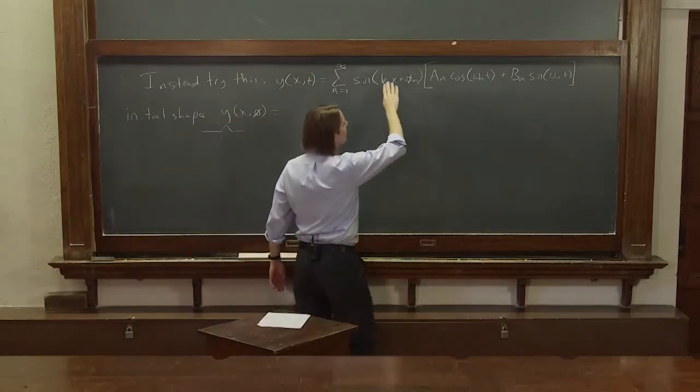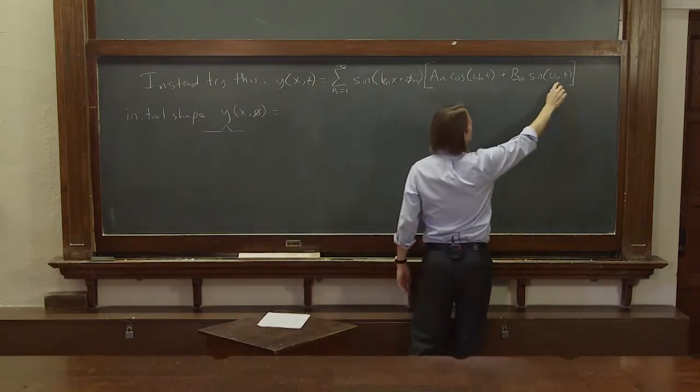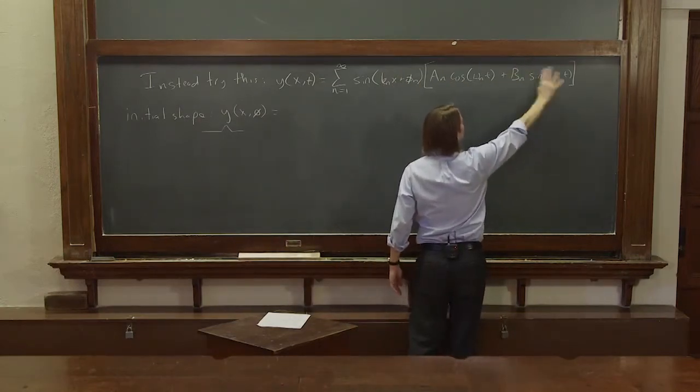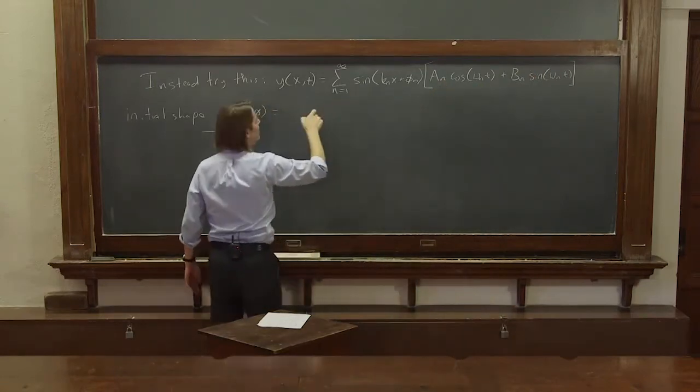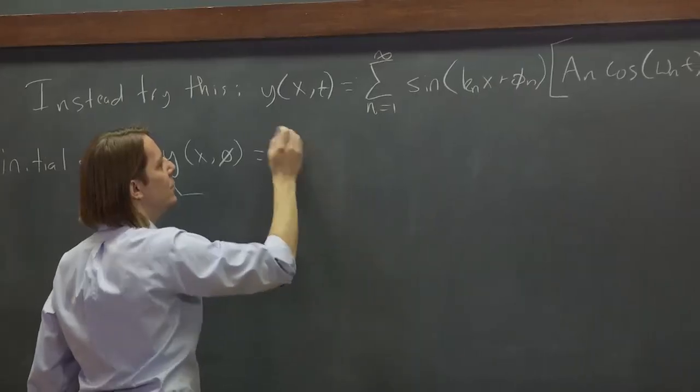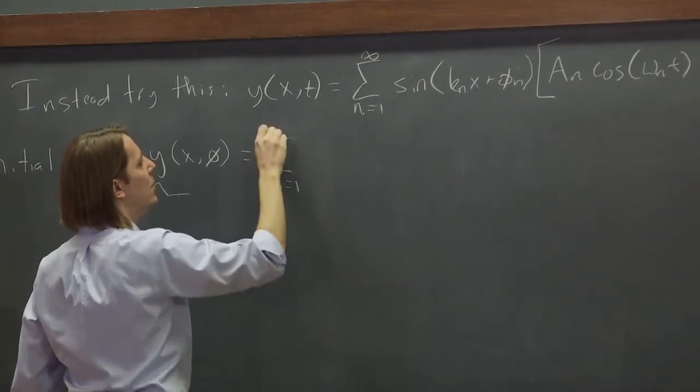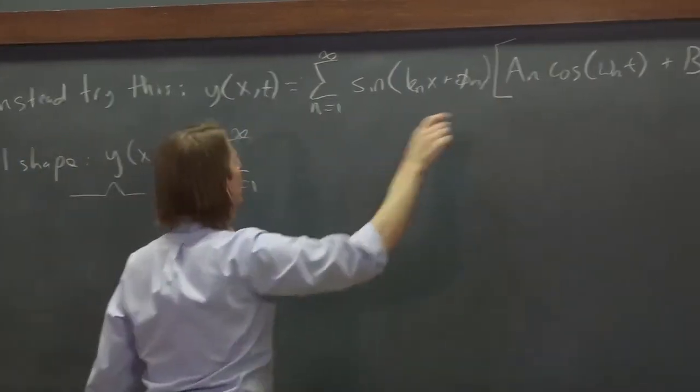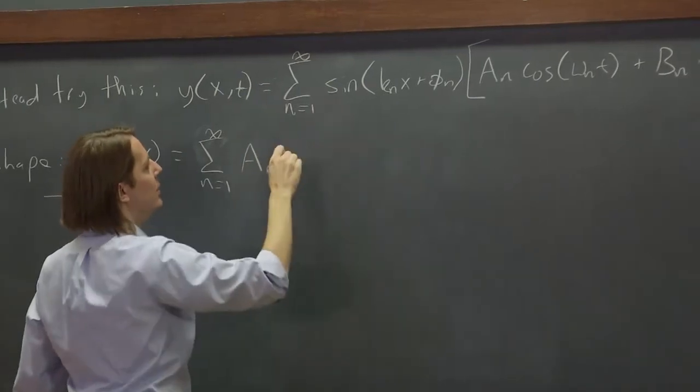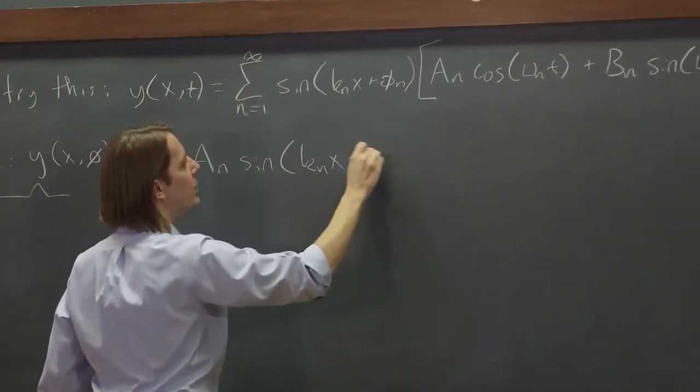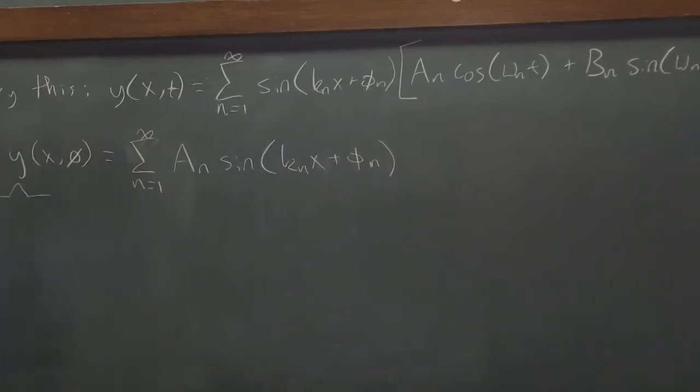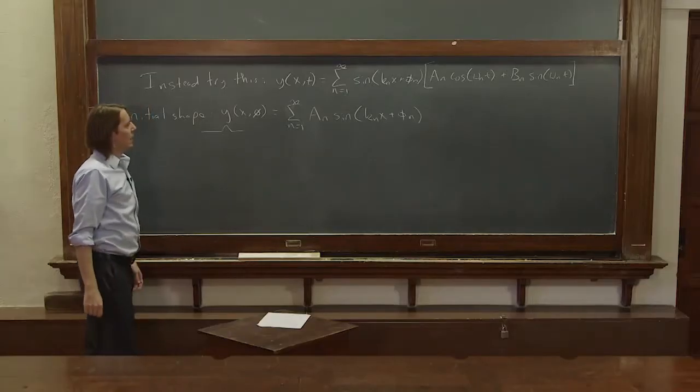What does that look like? If we say time equals 0, sine of 0 is 0, so the b_n's go away. Cosine of 0 is 1. So for time equals 0, that tells us that this thing is equal to sum from n=1 to infinity of just a_n, and then sin(k_n x + φ_n). All right.